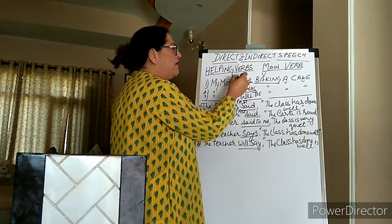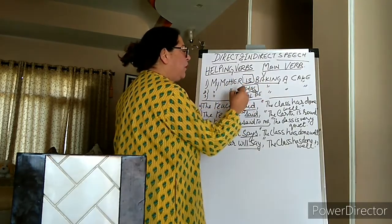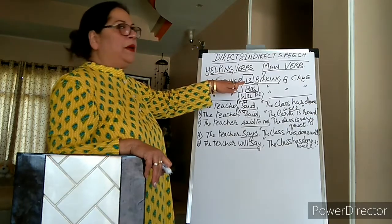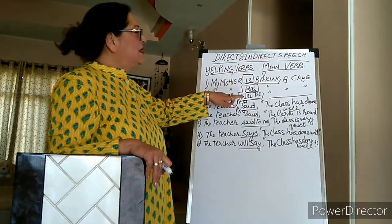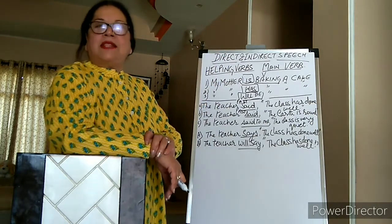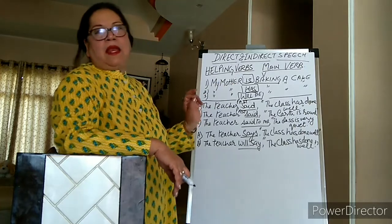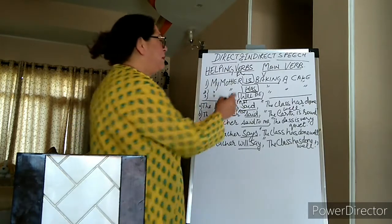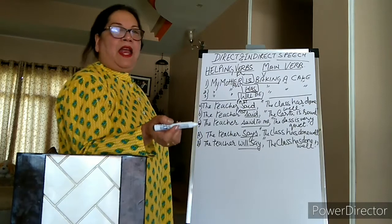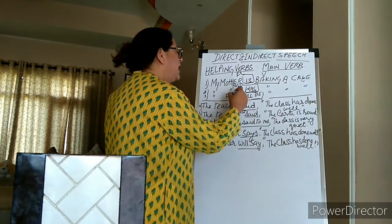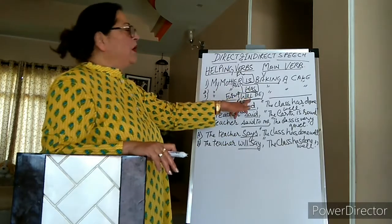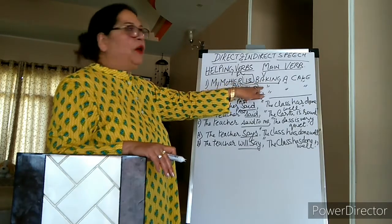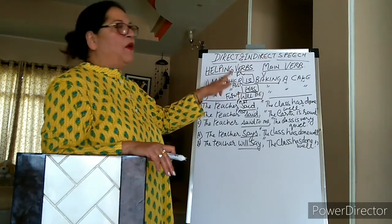These words — is, was, will be — are very, very important. These helping verbs tell us the tense used in the sentence. 'Is baking' is present tense, 'was baking' is past tense, and 'will be baking' is future tense. It is very important to know that helping verbs qualify the main verb and tell us the tense of the sentence.